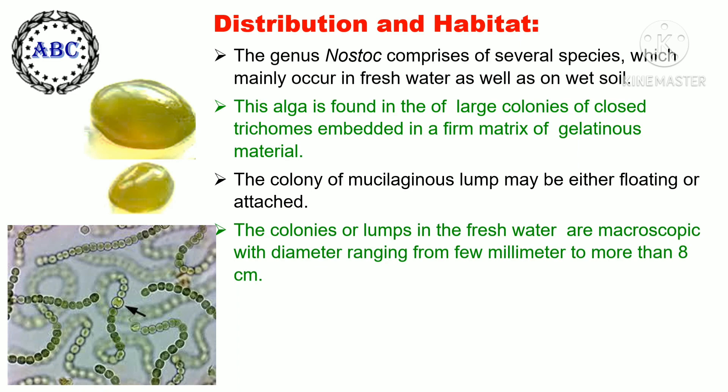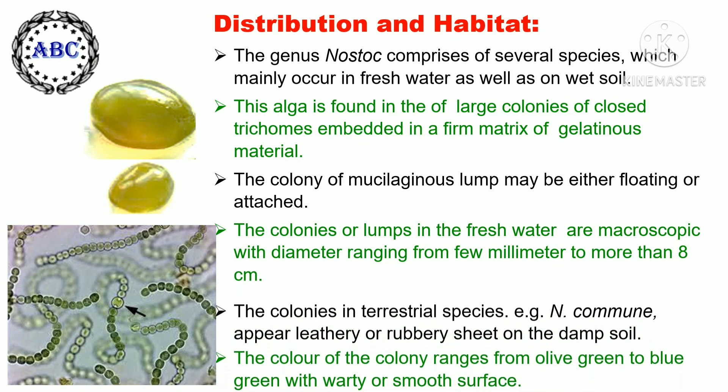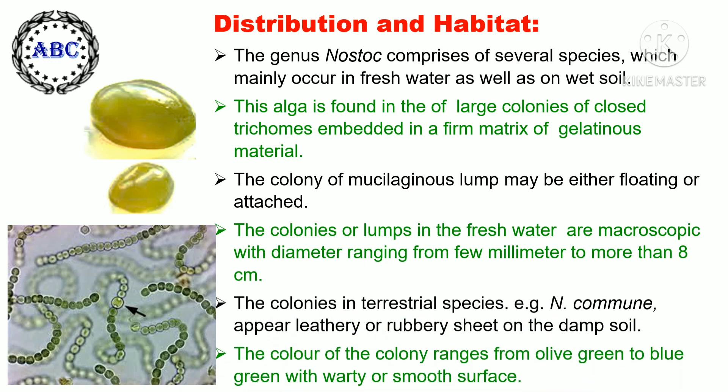The colonies or lumps in fresh water are macroscopic with diameter ranging from a few millimeters to more than 8 centimeters. The colonies in terrestrial species, for example Nostoc commune, appear as a leathery or rubbery sheet on damp soil. The color of the colony ranges from olive green to blue-green with a wavy or smooth surface.